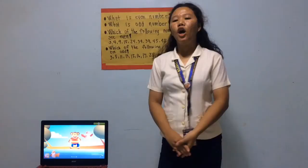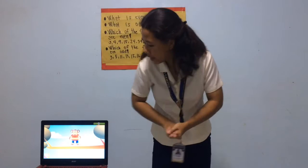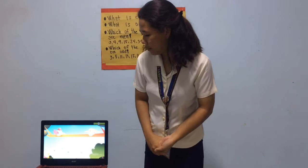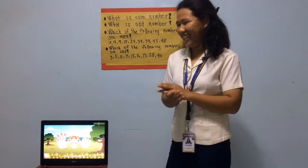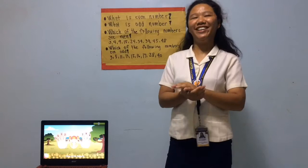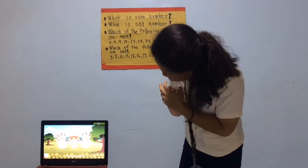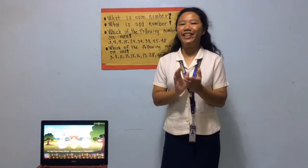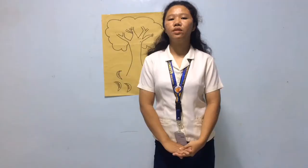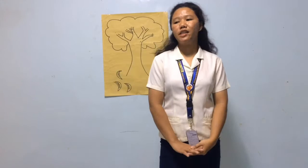Okay, let's sing this song. This is Ten Little Fingers. One little, two little, three little fingers. Four little, five little, six little fingers. Seven little, eight little, nine little fingers. Ten little fingers. Nine little, eight little fingers. Seven little, six little, five little fingers. Four little, three little, two little fingers. One little finger.